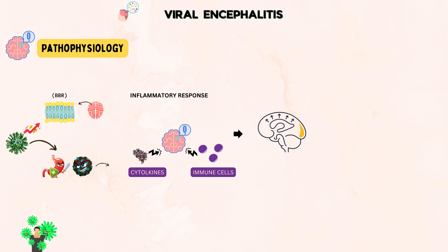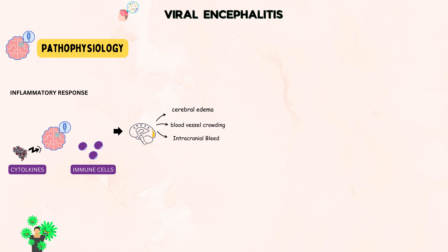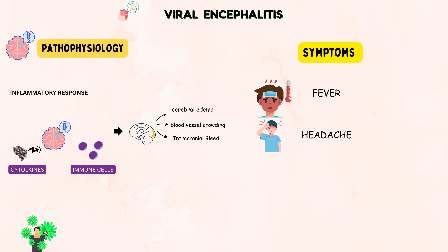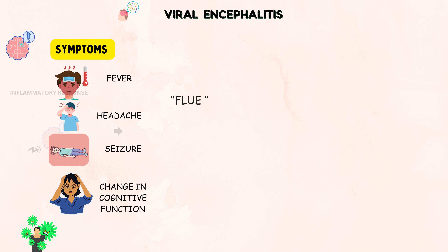On close examination, the brain often shows swelling, blood vessel crowding, and bleeding. It's common to see an invasion by certain white blood cells or specialized brain cells. This disruption can manifest as a range of symptoms, from fever and headache to seizures and changes in cognitive function.